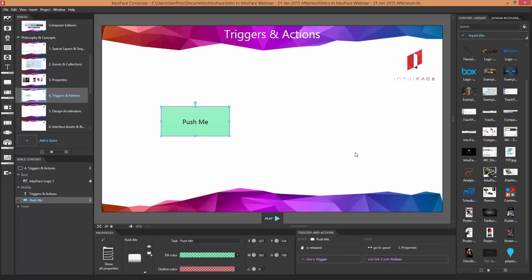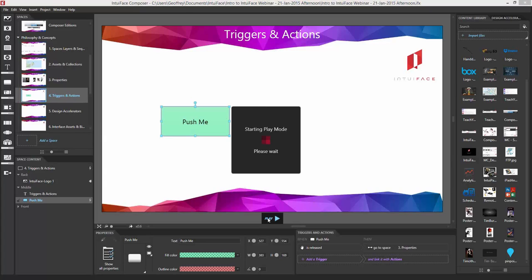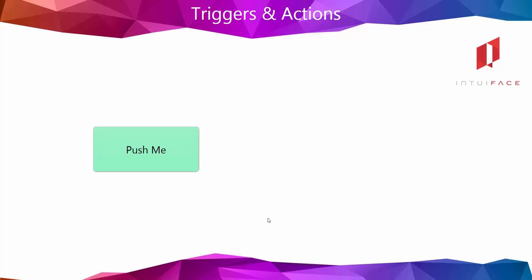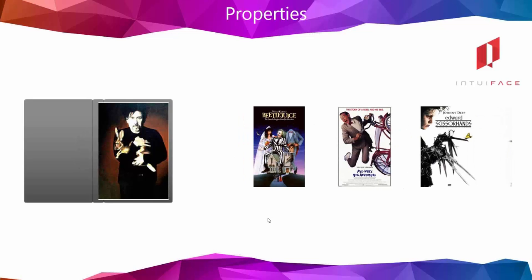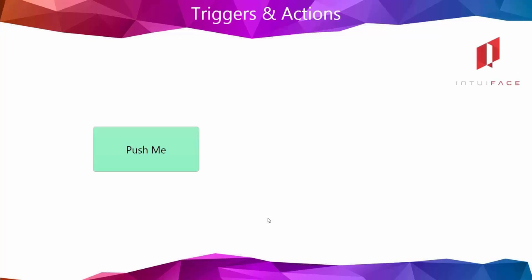Pushing play: here we have the button 'push me' — one, two, three touch — and we navigate to the Properties space. Simple. And it doesn't even have to be an asset as the trigger — for example, if I put my finger in an empty part of the space and drag left, it takes me back to the Triggers and Actions space. Even on-screen gestures can be triggers. Looking at the space itself in the Space Content panel, the space itself has two triggers built in: 'detect a gesture swipe left' and 'detect a gesture swipe right,' which cause navigation actions — go to the next space or go to the previous space.